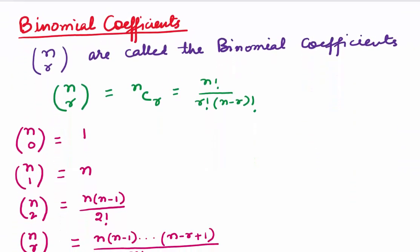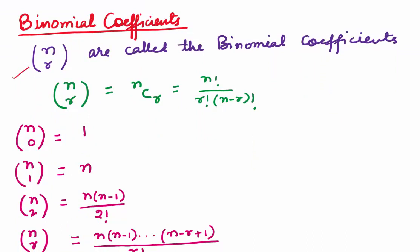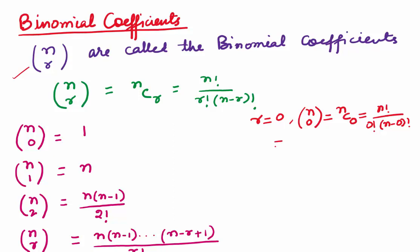You have already seen what binomial coefficients are. We denote them by nr and they are nothing but nCr. nCr can be found using the formula n factorial upon r factorial into n minus r factorial. All these coefficients nr can be found by giving particular values to r. If I take r to be 0, this means I am finding n0. n0 is nC0, which is n factorial upon 0 factorial times n factorial, and on simplifying, 0 factorial is 1, so we get 1.